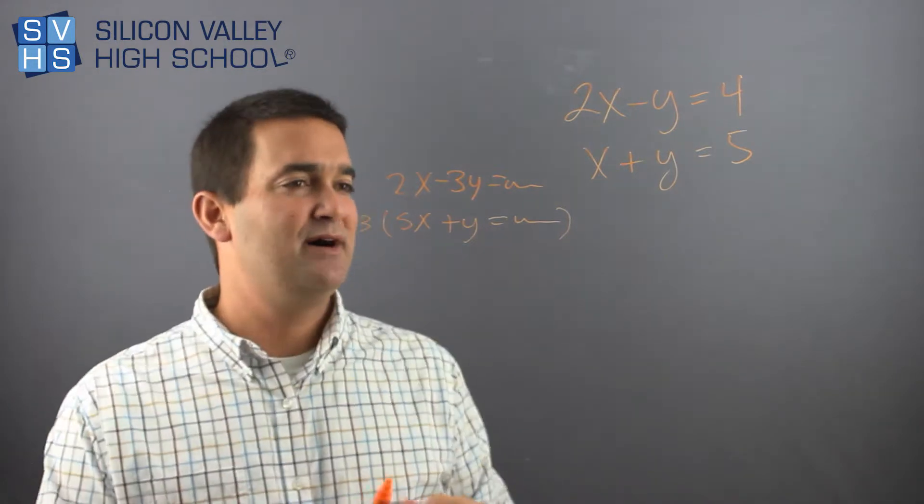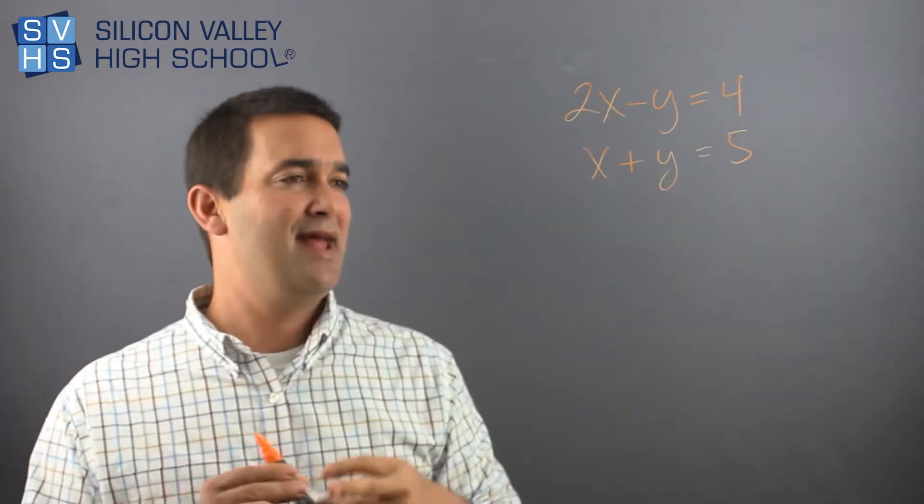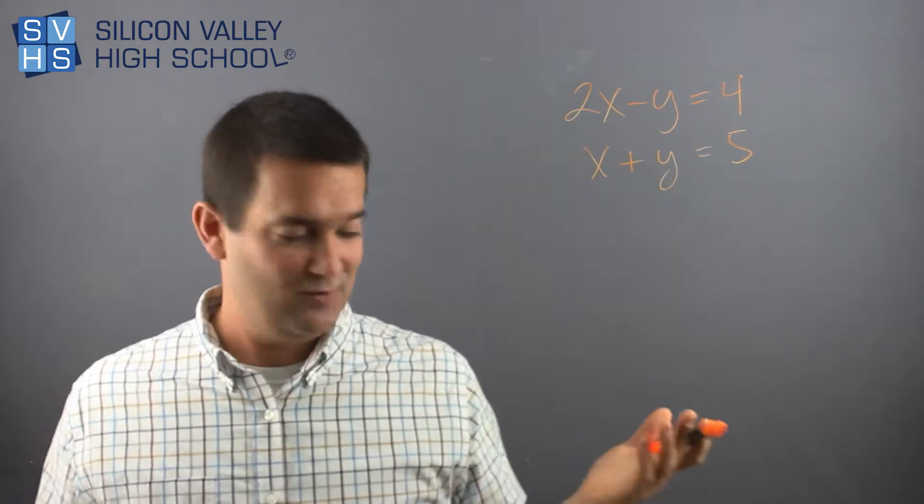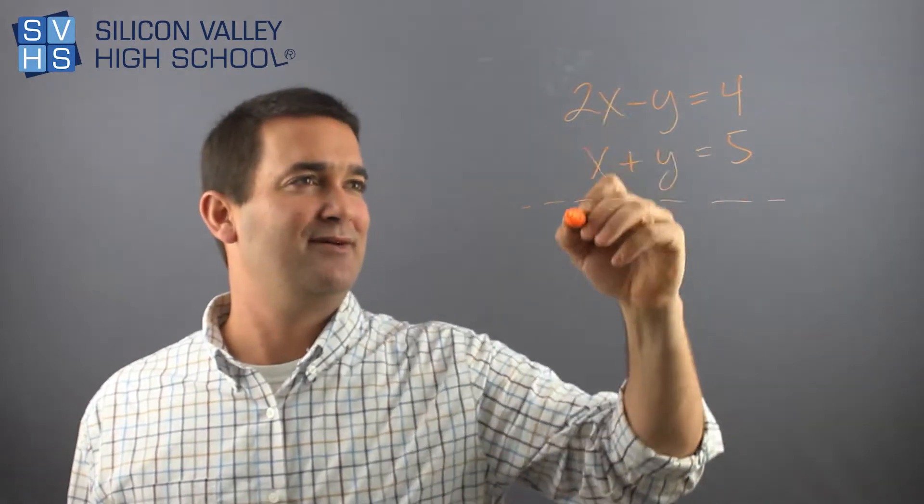But in the one given to us above, it's super clean and easy and we don't have to. We just can go ahead and add them straight down. So this is how the addition method works in the case that you're lucky like this. You just go ahead and maybe draw a dotted line and add down.